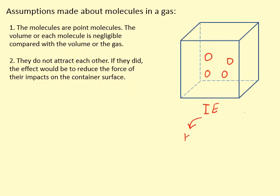We know that internal energy consists of kinetic energy, due to the motion of particles, and potential energy, due to the force of attraction between particles. The particles are still moving so they still have kinetic energy, but there's no force of attraction between the particles for an ideal gas, so we don't have any potential energy.